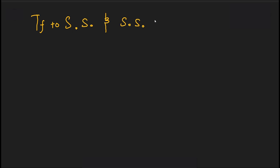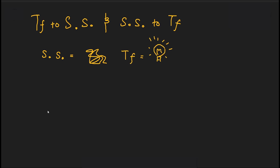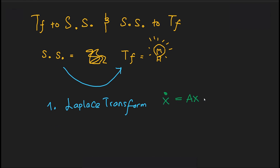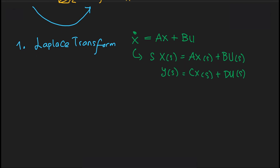The state space representation can be transformed into a transfer function, since some analyses may be more intuitively reviewed through frequency response analysis. To do so, we first convert the state space representation into the frequency domain by taking the Laplace transform of both the state equation and the output equation. The state equation x-dot = Ax + Bu becomes sX = AX + BU, and similarly the output equation is transformed from a function of t into a function of s.